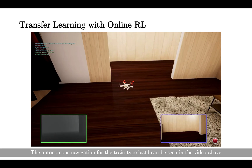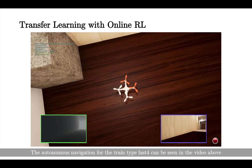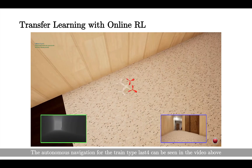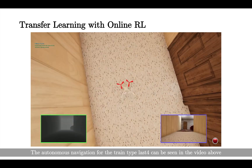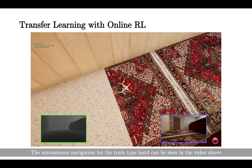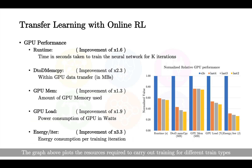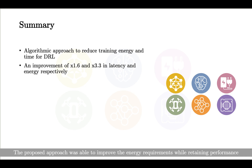The autonomous navigation for train type LAST4 can be seen in the video above. The graph above plots the resources required to carry out training for different train types. The energy required for train type LAST4 is 3.3 times less than end-to-end training, while retaining the same mean safe flight performance. The proposed approach was able to improve the energy requirements while retaining the performance.